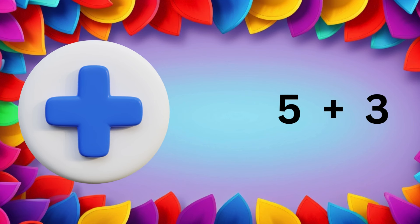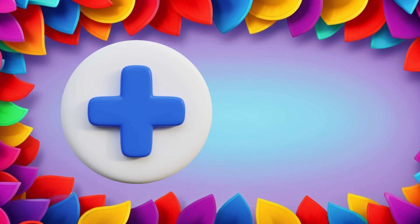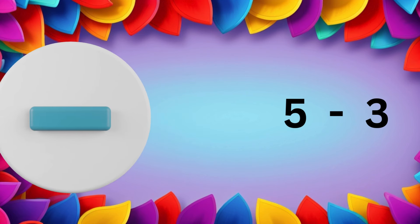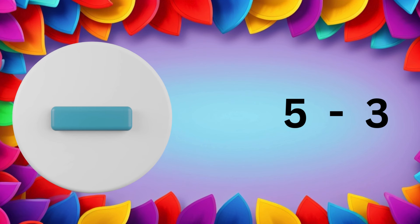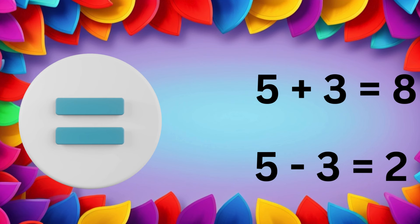This is the plus sign. It means we're adding things together. This is the minus sign. It means we're taking things away. And this is the equals sign. It shows us the result of adding or subtracting.